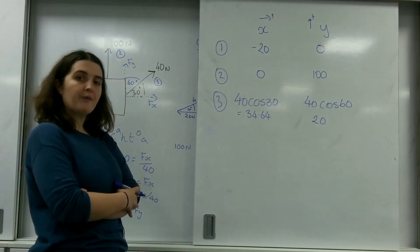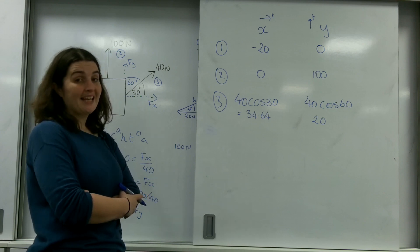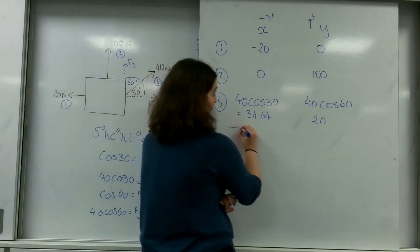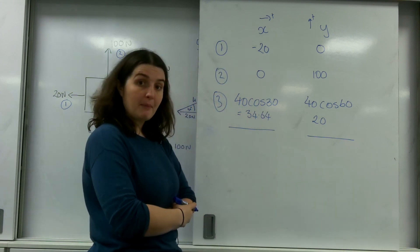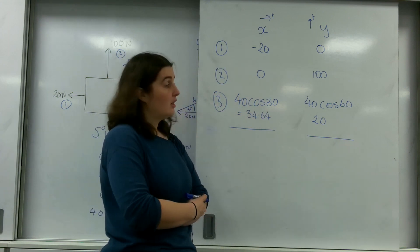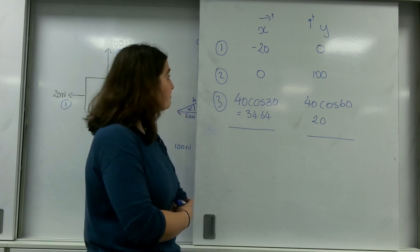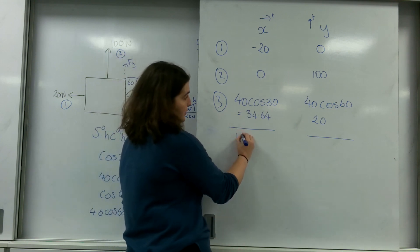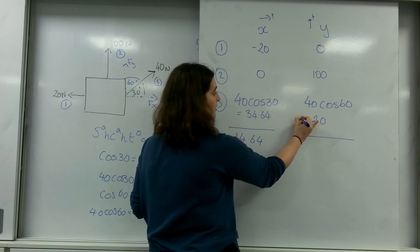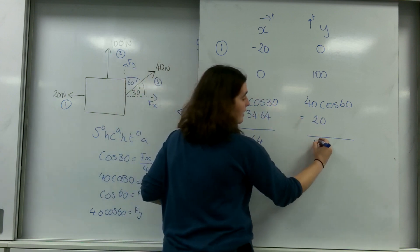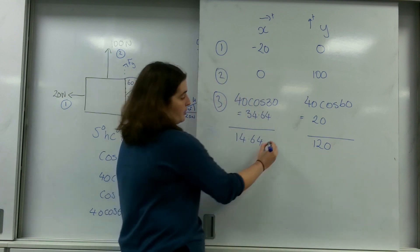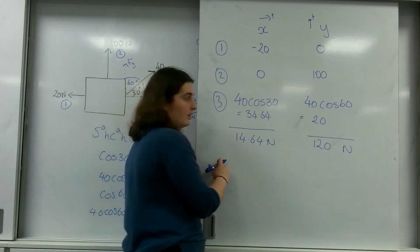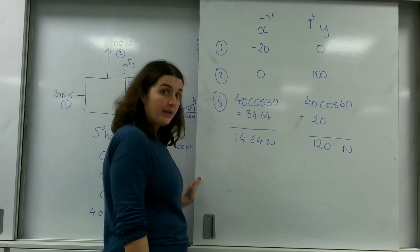I have now worked out the components of each force in the x and y directions. I'm going to add these up to find the total acting in x and the total acting in y. So minus 20 plus 34.64 gives 14.64 in x. And 100 plus 20 gives 120 in y. So I'm working 14.64 newtons in the x direction and 120 newtons in the y direction.